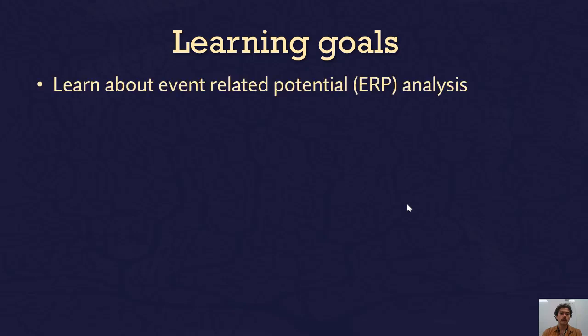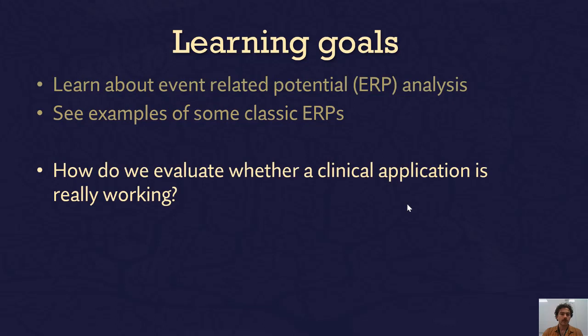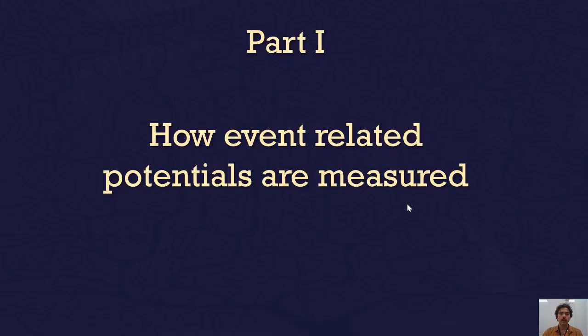Our learning goals for today: we want to learn what event-related potential analysis, or ERP analysis, is. We're going to see some examples of classic ERPs. We're going to look at a particular use case of using ERPs to assess consciousness in people who have brain injury, and then ask more generally how do we evaluate whether a clinical application is really working.